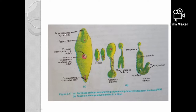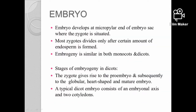The zygote is the starting point of embryogenesis. Through embryogenesis, the embryo is formed and develops. The embryo has nutritive cells and food material is generated to support embryo development.